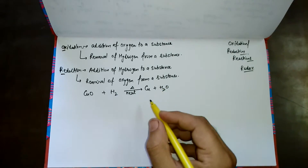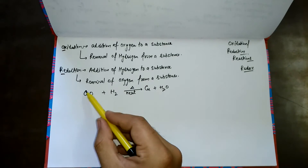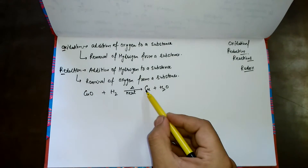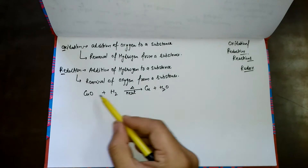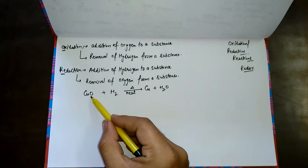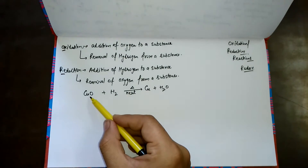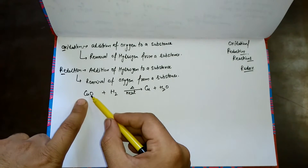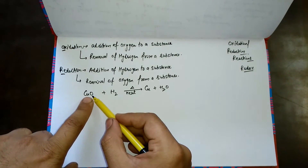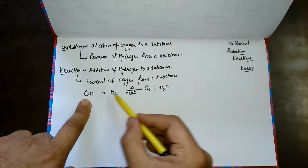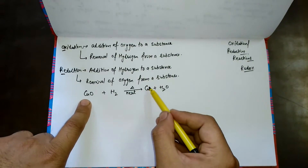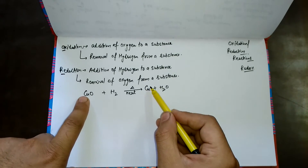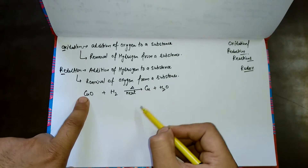In this reaction, copper oxide is changed into copper. That means oxygen is removed from the copper oxide. On the reactant side we have oxygen with copper, but on the product side we have copper alone, so we say oxygen is being removed from the copper oxide.